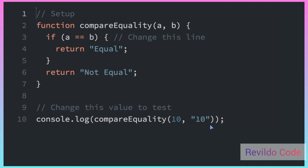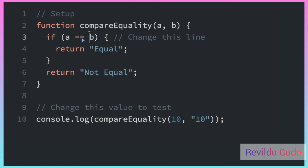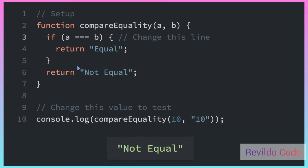We'll do one more review with the equality operator and the strict equality operator. If I run this, the console says 'equal' because it's checking if the number 10 and the string 10 are equal — since we're using the equality operator with two equal signs, it performs a type conversion and converts the string into a number. But if we use the strict equality operator with three equal signs and run that again, you'll see 'not equal' in the console, because now it's not converting the types — it's just checking if a number is equal to a string, which it is not.